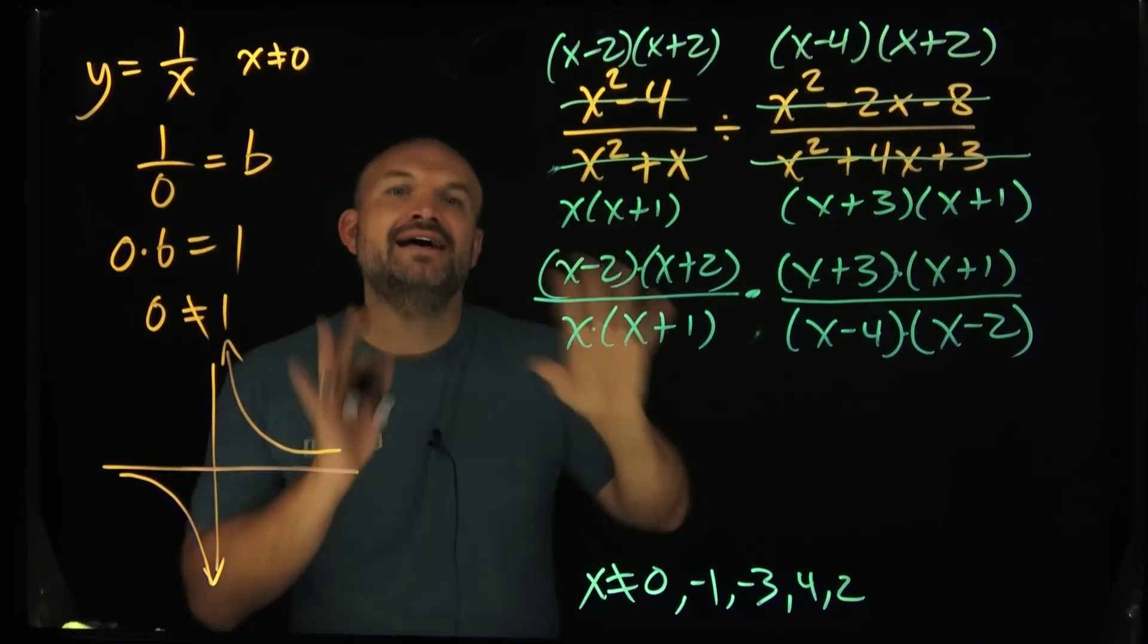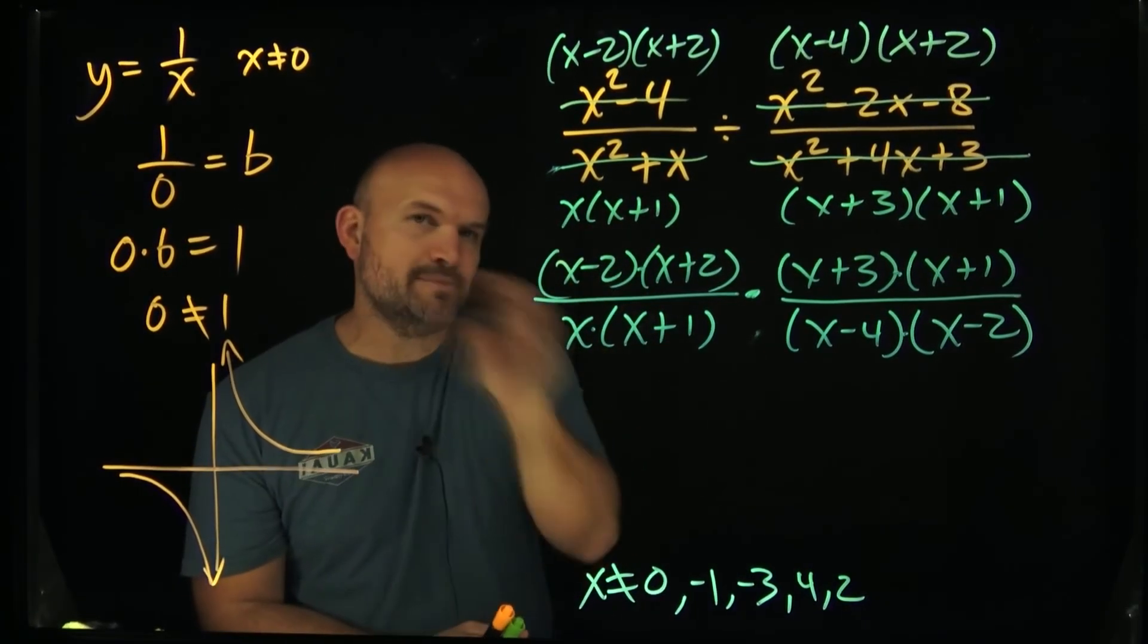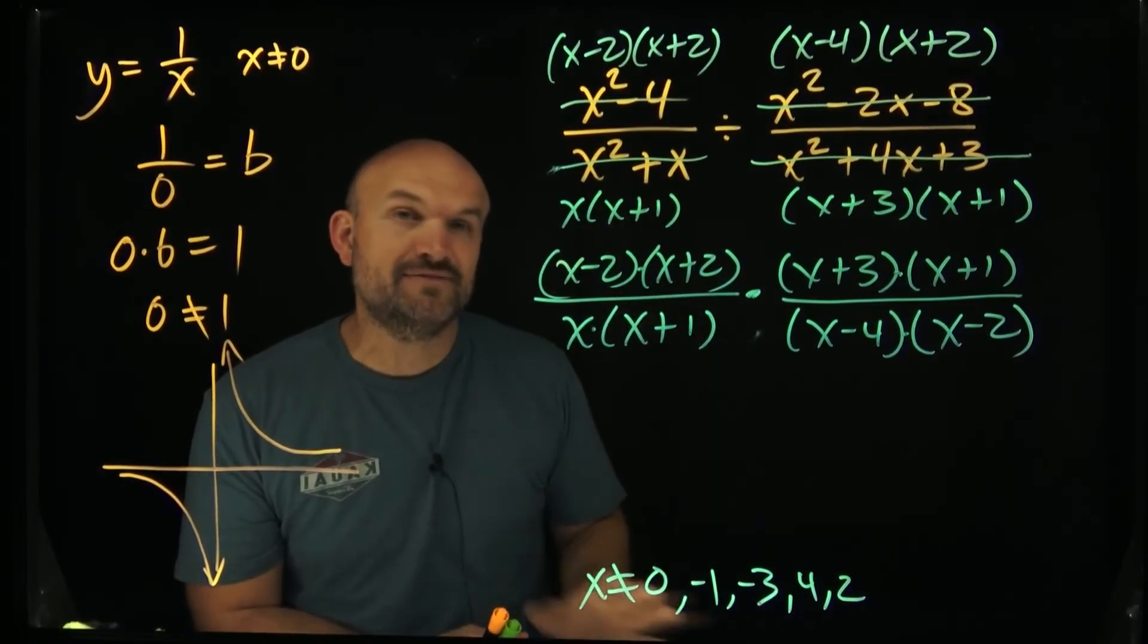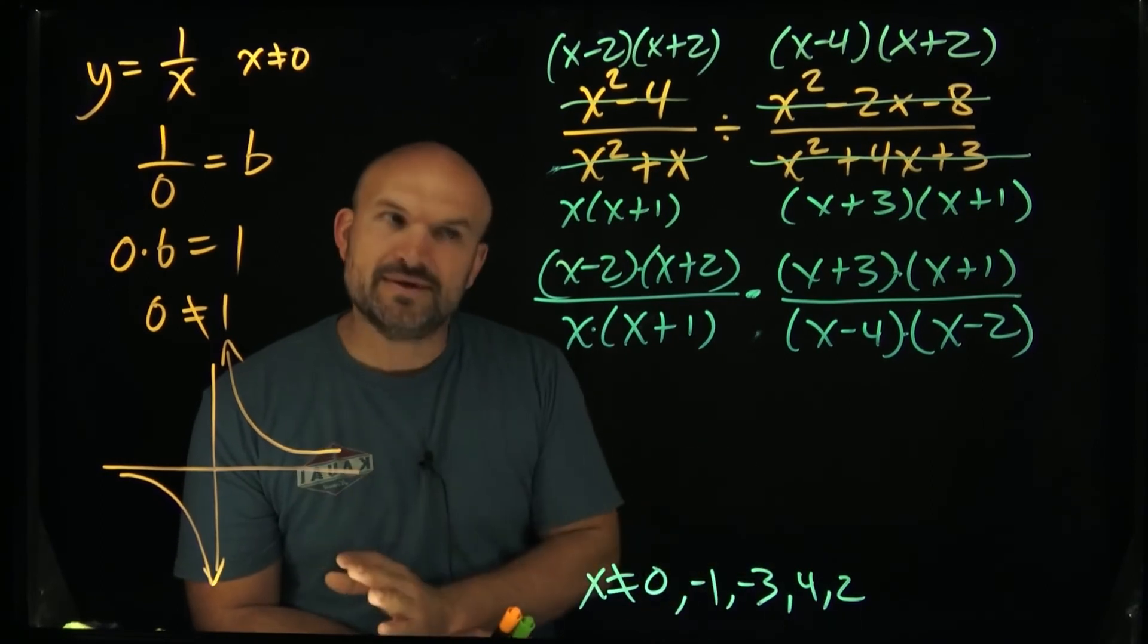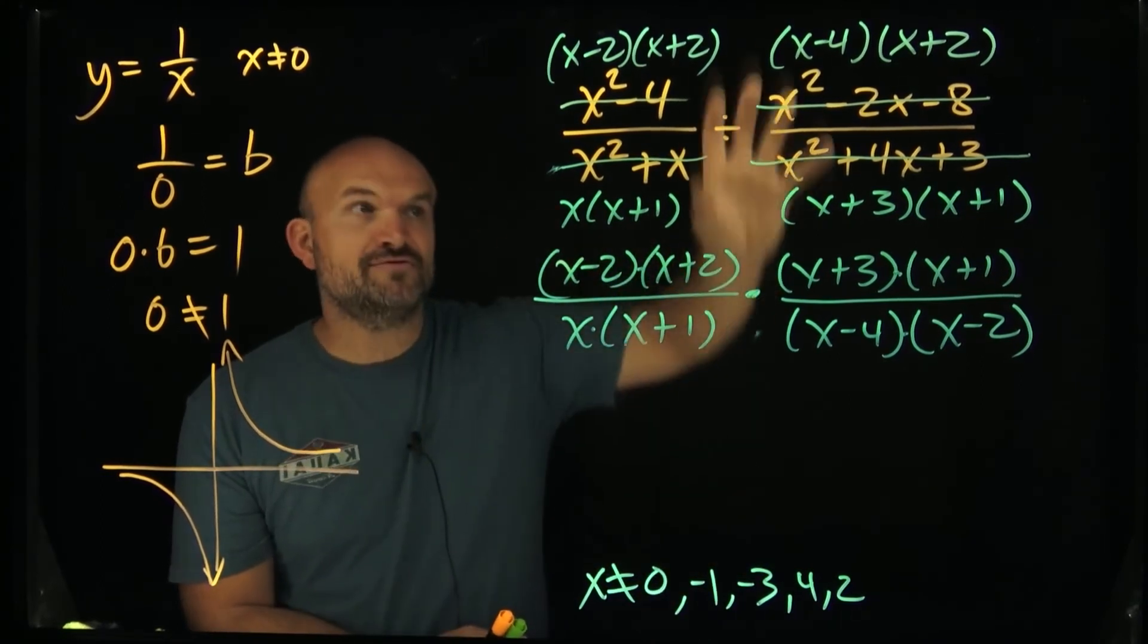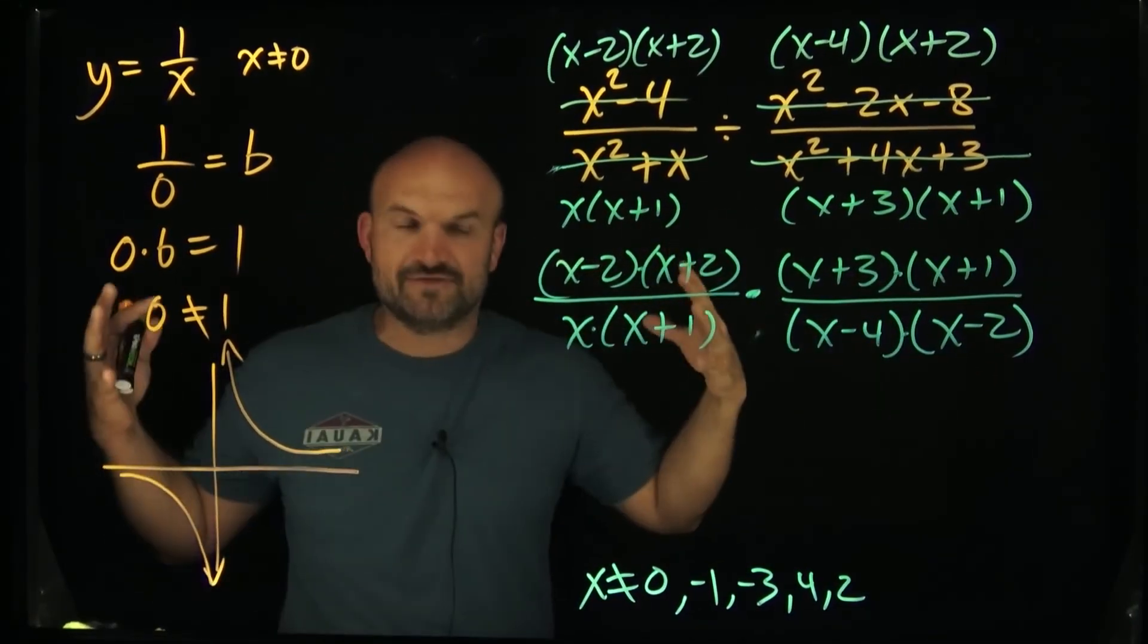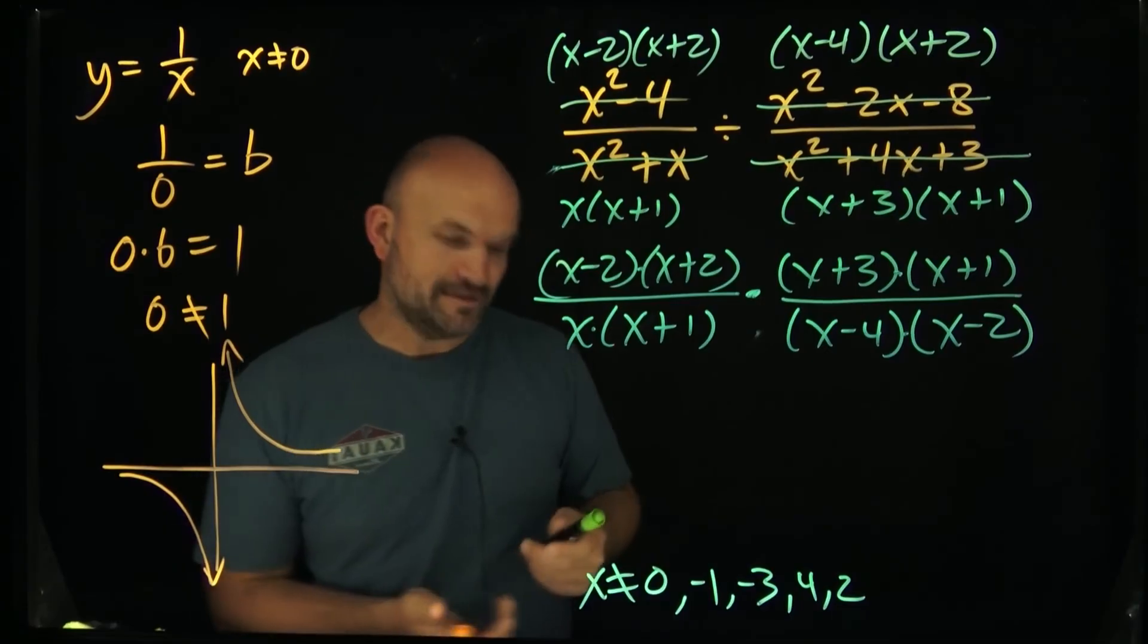Now once I've identified my excluded values, now I can worry about simplifying. One of the big mistakes that students will make is they'll go through the whole process simplifying everything, and then they'll only find the excluded values from the simplified answer. Don't do that. Find your excluded values from the original example just in a factored out form, then go ahead and simplify.